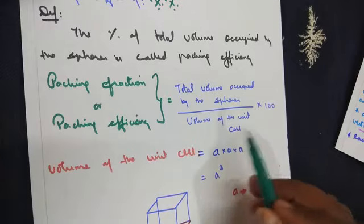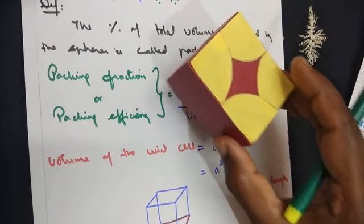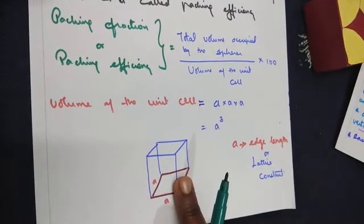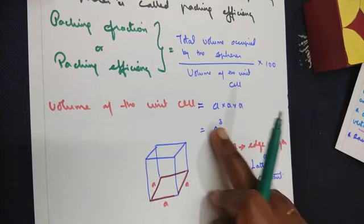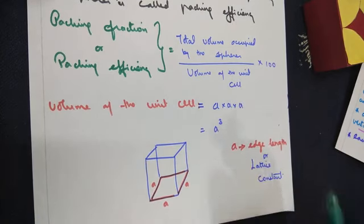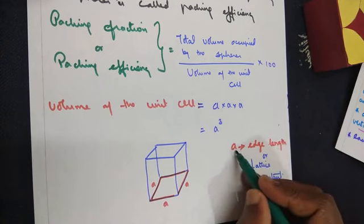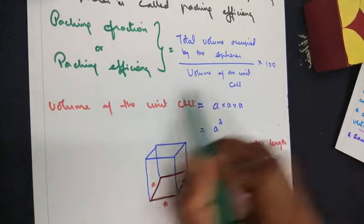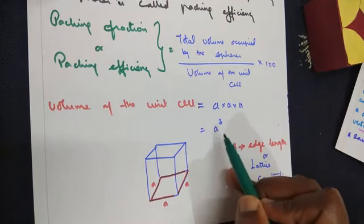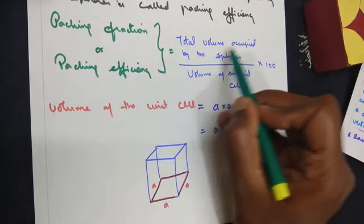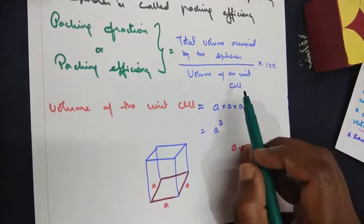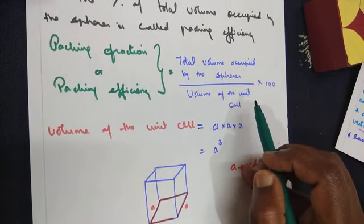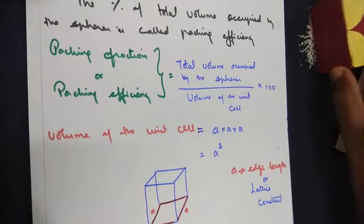The volume of the unit cell is a³, where a stands for the edge length or lattice constant. This formula remains the same for all types of cubic unit cells. However, the total volume occupied by the sphere alone differs from simple cubic to BCC, BCC to FCC, and edge centered. We will see the details in the next class. Thank you.